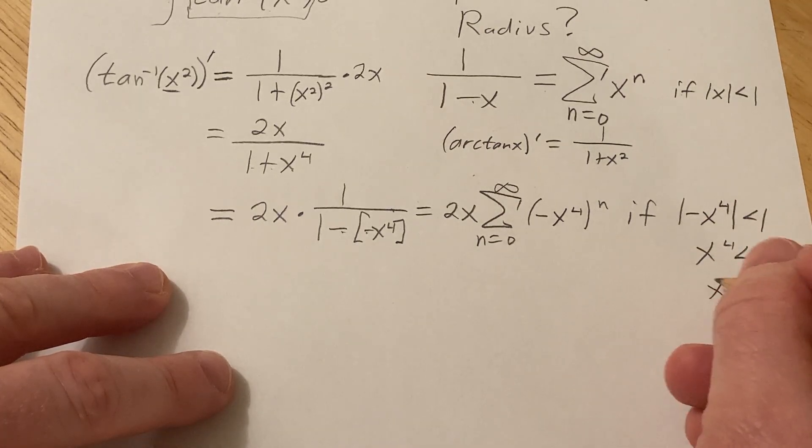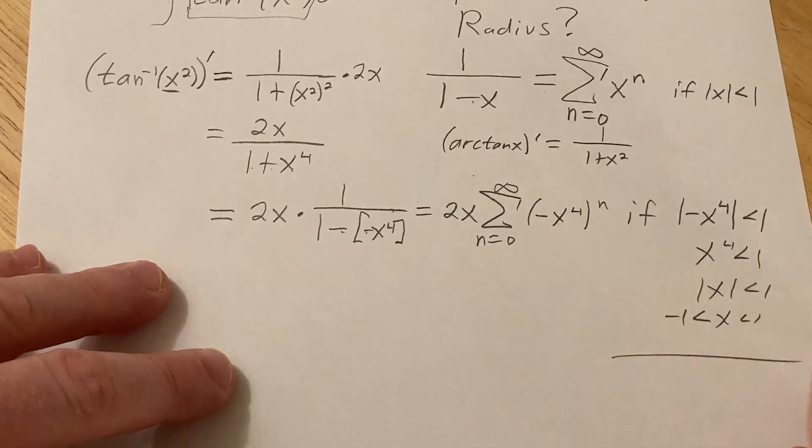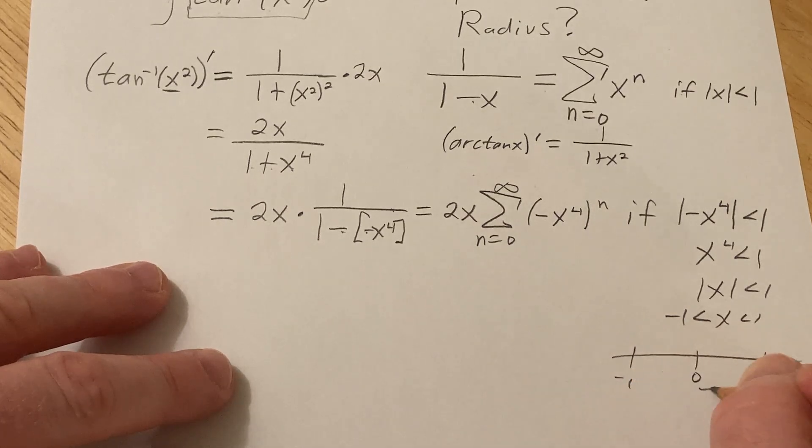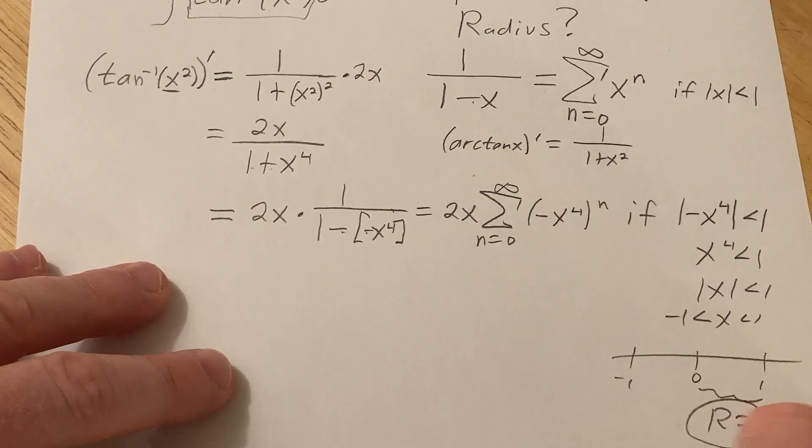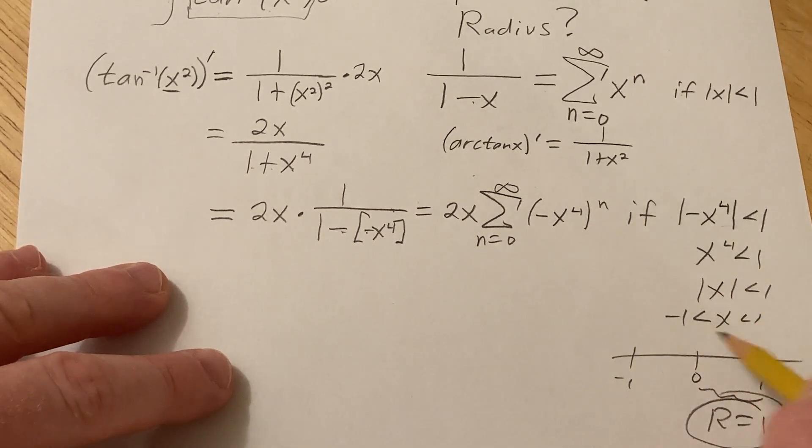So our interval is going to be something like this. This is a power series centered at 0 so our radius is going to be 1. You can just look at it and say it's centered at 0 and this is going to imply all of this and the radius is just always this distance.